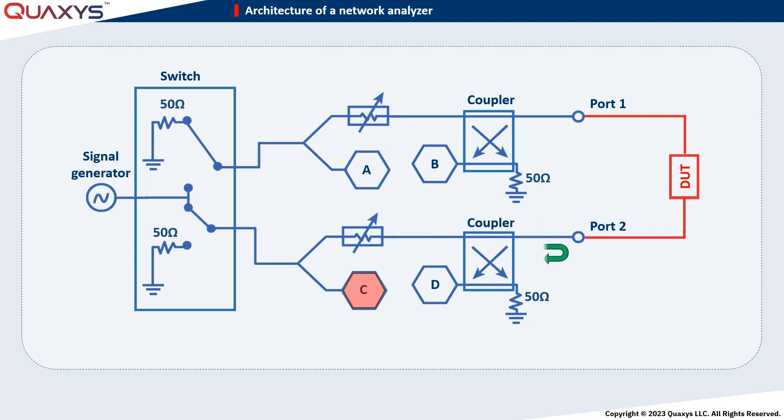The reflected signal from port 2 is coupled by the directional coupler to detector D. We know that S22 is defined as the ratio of the reflected and incident powers. Therefore, the S22 parameter is proportional to the ratio of the powers detected by D and C.